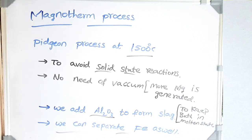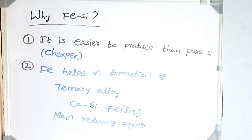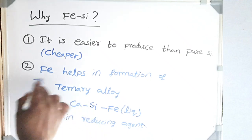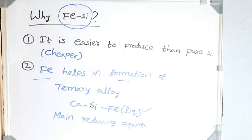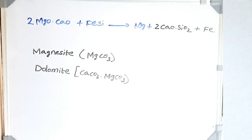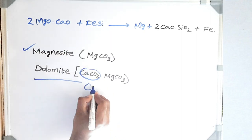Ferro-silicon is used in the Pigeon and Magnotherm processes because it is cheaper to produce than pure silicon, and iron has a role in generating the ternary alloy, which is the main reducing agent. Although iron is essentially a spectator in the overall process, it helps generate the ternary alloy during the mechanism. In ferro-silicon, the activity of silicon is lower compared to pure silicon, so there are fewer chances of backward reaction — which is why it is easier to produce ferro-alloys than pure metals.